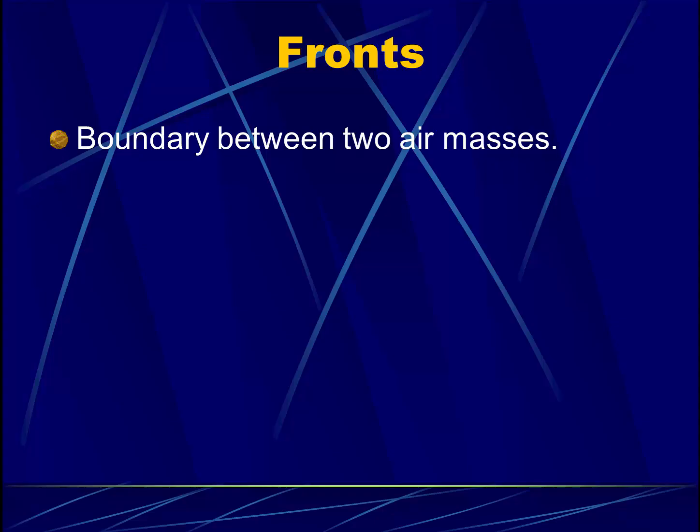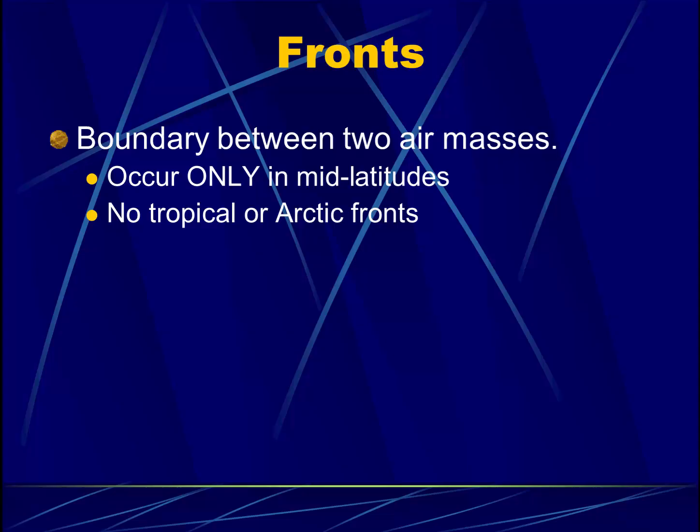So let's discuss this a little further. Very simply, a front is the boundary between two or more air masses. Fronts are a phenomenon that only occur in middle latitudes — there are no fronts in tropical regions or in arctic regions. If a front separates two different bodies of air with similar temperature and moisture, the temperature in the tropics is always warm and in the arctic regions always cold, so there will be no separation between warmer and cooler air in those locations.